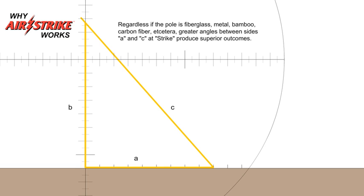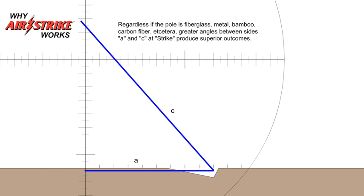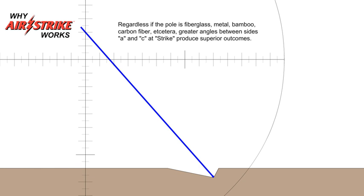Regardless if the pole is fiberglass, metal, bamboo, carbon fiber, etc., greater angles between sides a and c at strike produce superior outcomes.